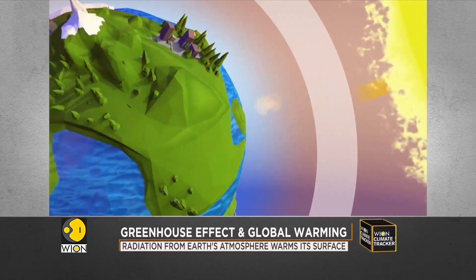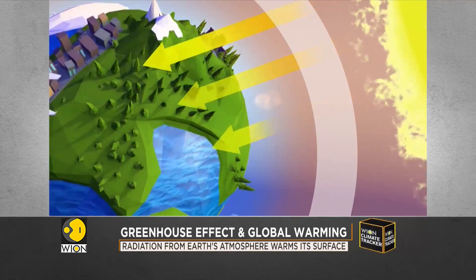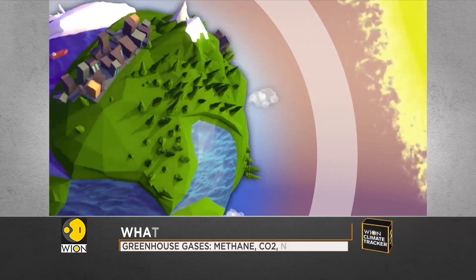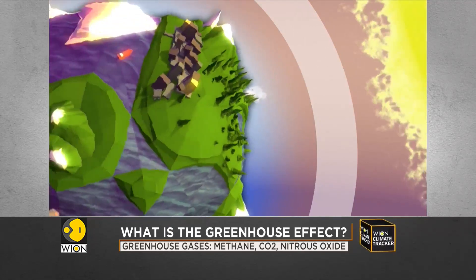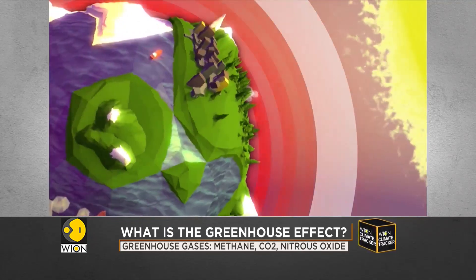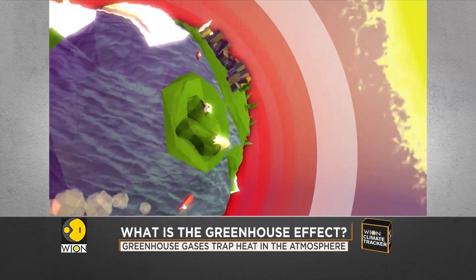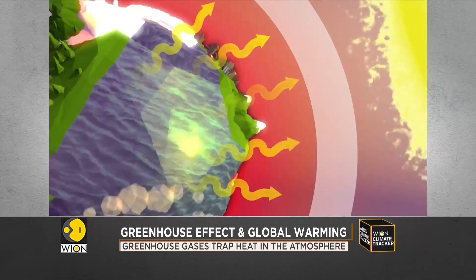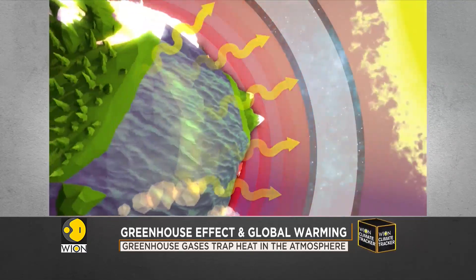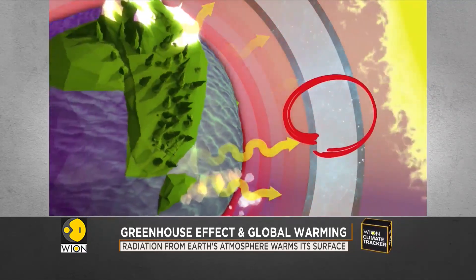The rest of the solar radiation is absorbed by the Earth. Once warmed, the Earth's surface releases heat in the form of infrared radiation. Part of this heat is stopped from returning into space by greenhouse gases in the atmosphere.